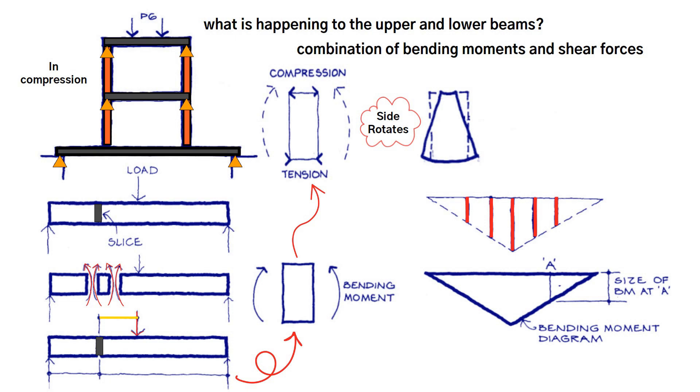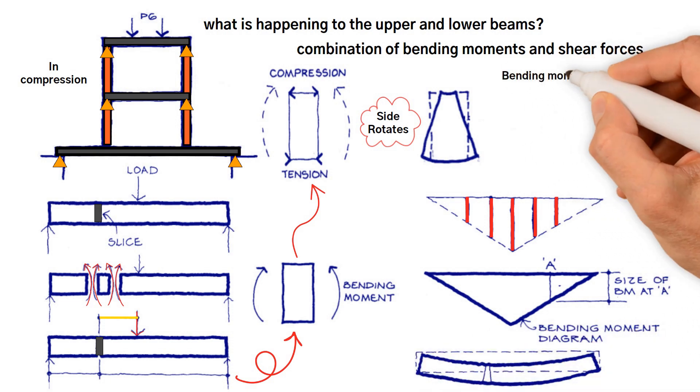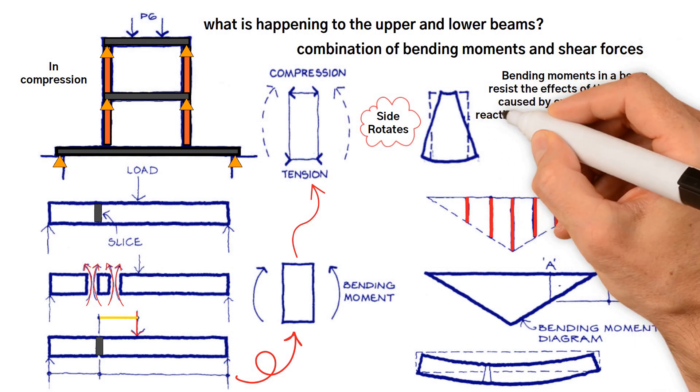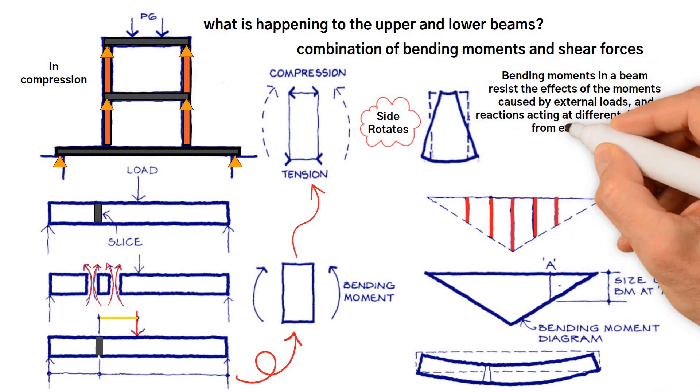And because each slice changes shape, the beam takes up a bent shape. Bending moments in a beam resist the effects of the moments caused by external loads and reactions acting at different distances from each other.